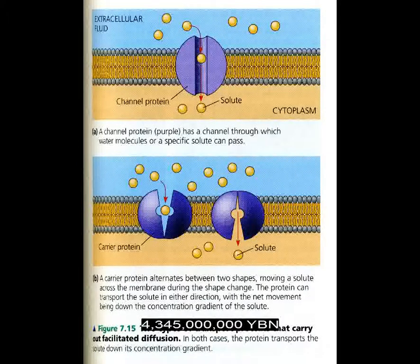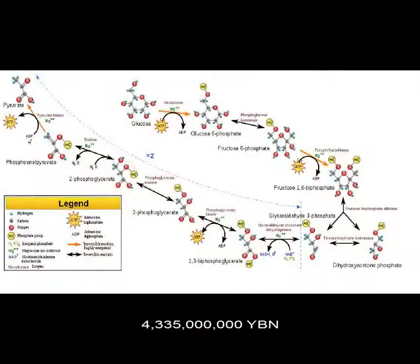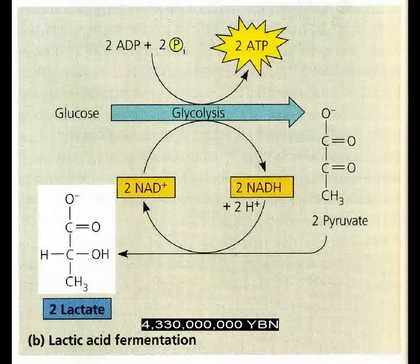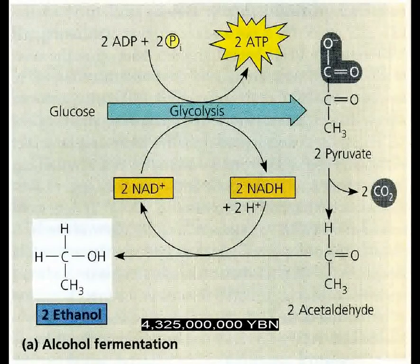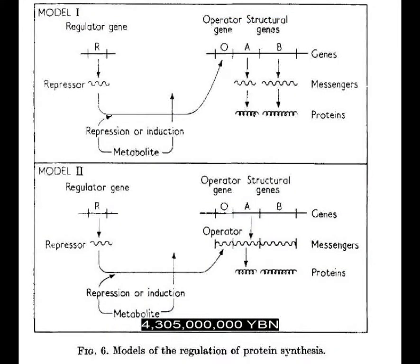Facilitated diffusion: proteins in the cell membrane allow only certain molecules to enter the cell. The first virus evolves — these cells depend on the DNA duplicating and protein production systems of other cells to copy themselves. Cellular respiration: glycolysis evolves in the cytoplasm. Cells can make ATP from glucose. ATP is the molecule that drives most cellular work. Fermentation evolves; cells can make lactic acid. Fermentation of ethanol evolves. Active transport evolves: proteins transport molecules into and out of the cytoplasm. Operons allow selective protein assembly.